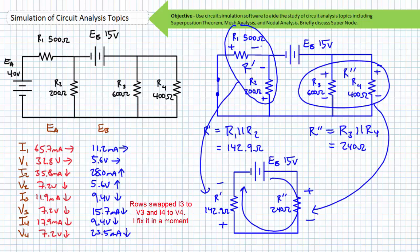Ohm's law can be used to solve for the current through each resistive element, where I1 is determined to be 11.2 milliamps, left to right. I2 is determined to be 28 milliamps, bottom to top. I3 is determined to be 15.7 milliamps, top to bottom. And I4 is determined to be 23.5 milliamps, top to bottom.